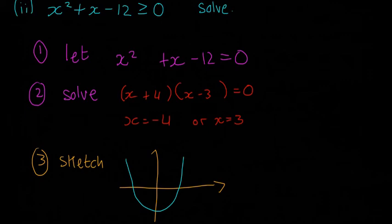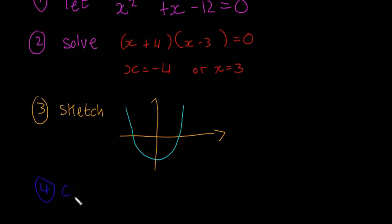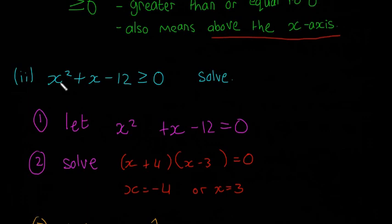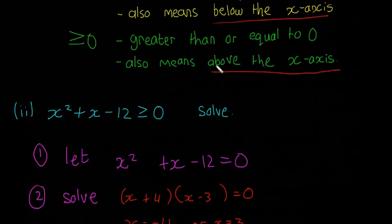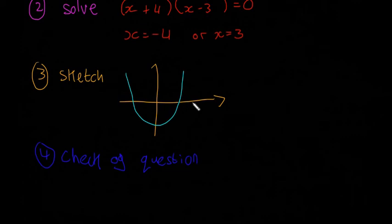And then the last step I'll do in dark blue, step 4 is to check your original question. So the question is asking us where is this graph x squared plus x minus 12 greater than or equal to zero? Greater than or equal to zero means above the x axis. So where is this curve above the x axis? The answer here is anywhere here and any of these x values out here from here onwards are going to be above the x axis because the curve goes above the x axis there.